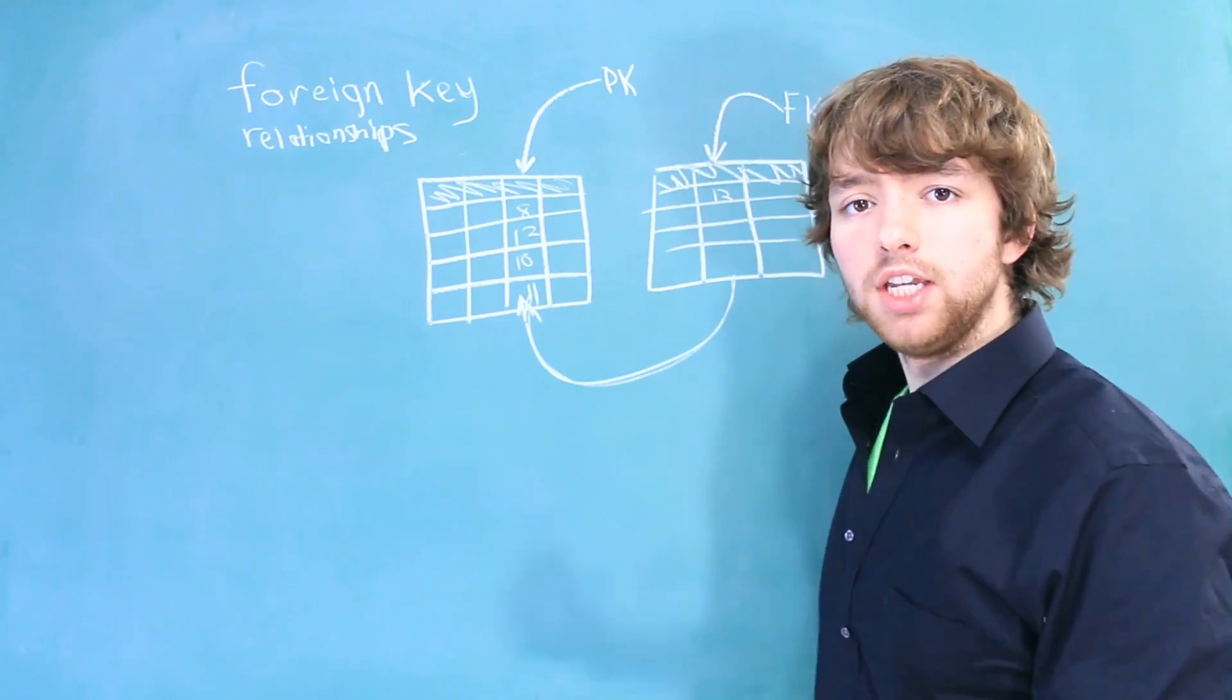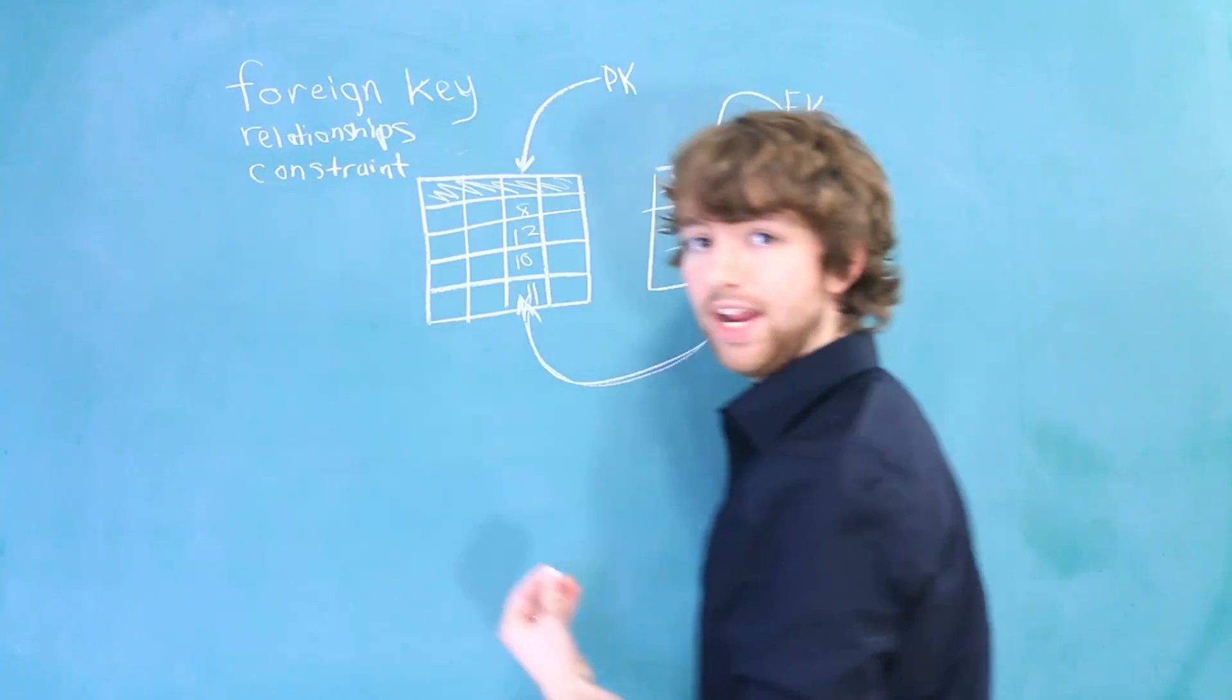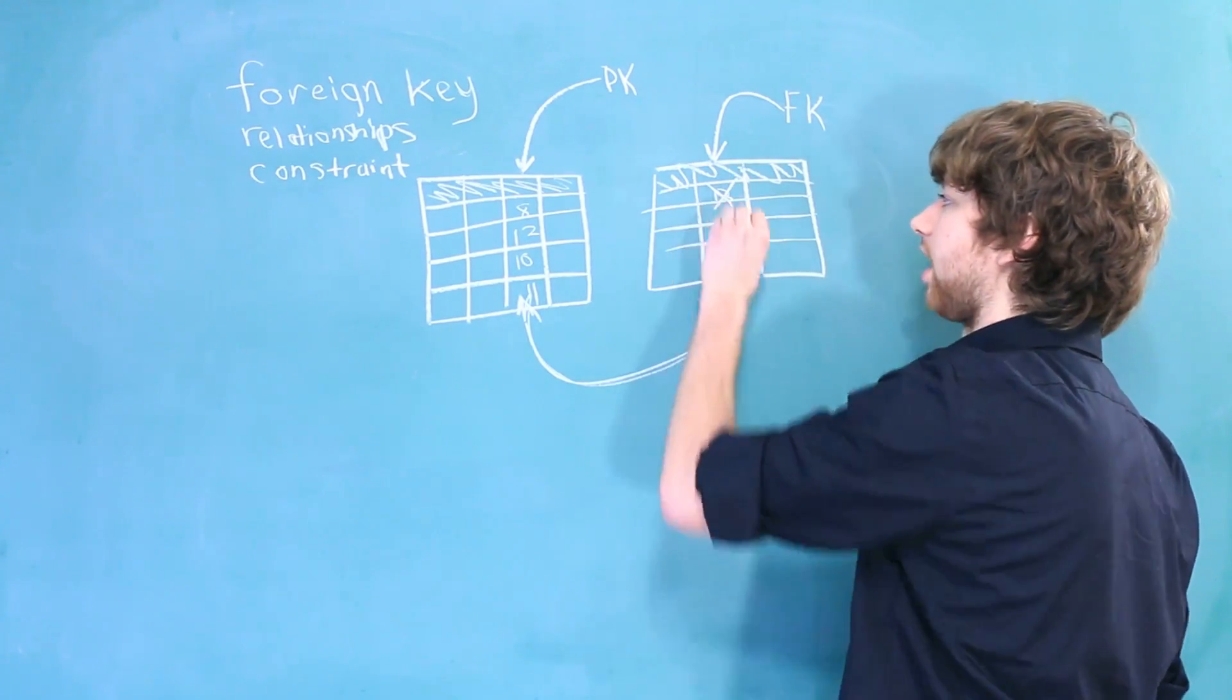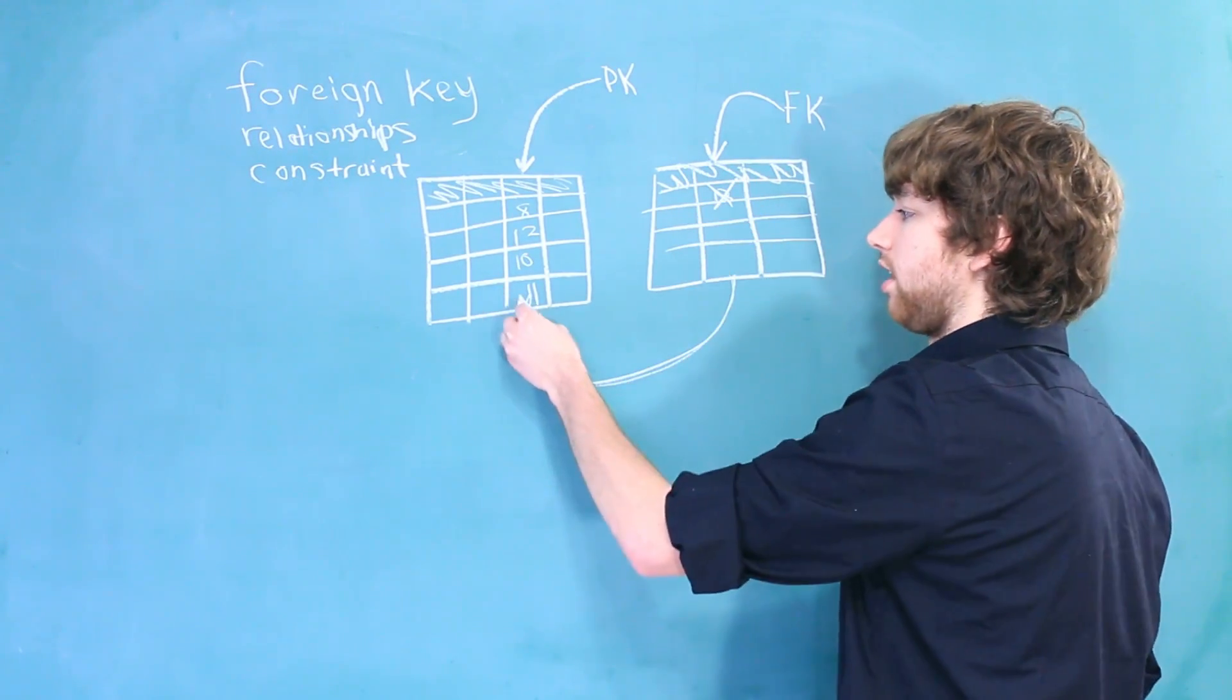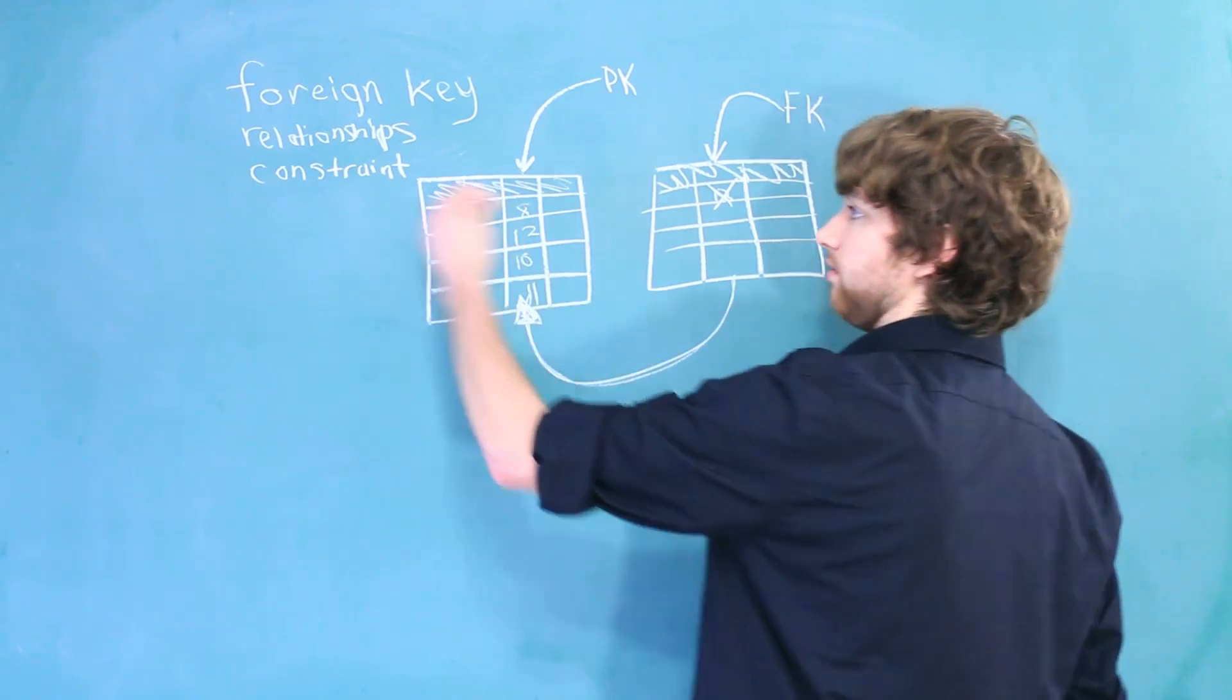Now, both the primary key and the foreign key are known as constraints. A constraint is something that prevents certain data. In this situation, we are preventing the value 13 because it's not a value in the parent table. That is a perfect example of a constraint.